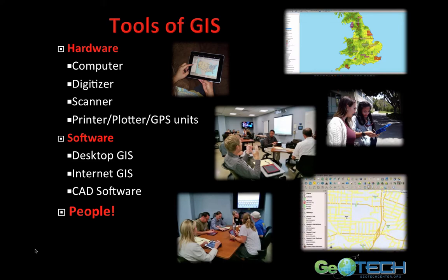The tools today are really different than the tools a decade ago. We still use computers, but today's computers are so much more powerful, faster, and have so much more memory that it has revolutionized geospatial analysis. Other tools include the digitizer, scanner, printer, plotter, and GPS units. Now we see tablets running GIS software, which has really brought mobility to the science that we didn't have just a handful of years ago.